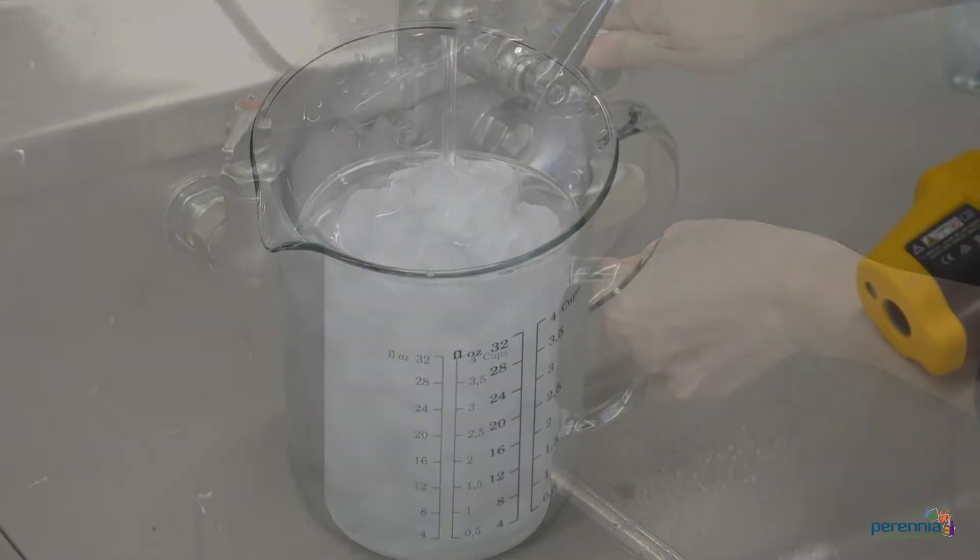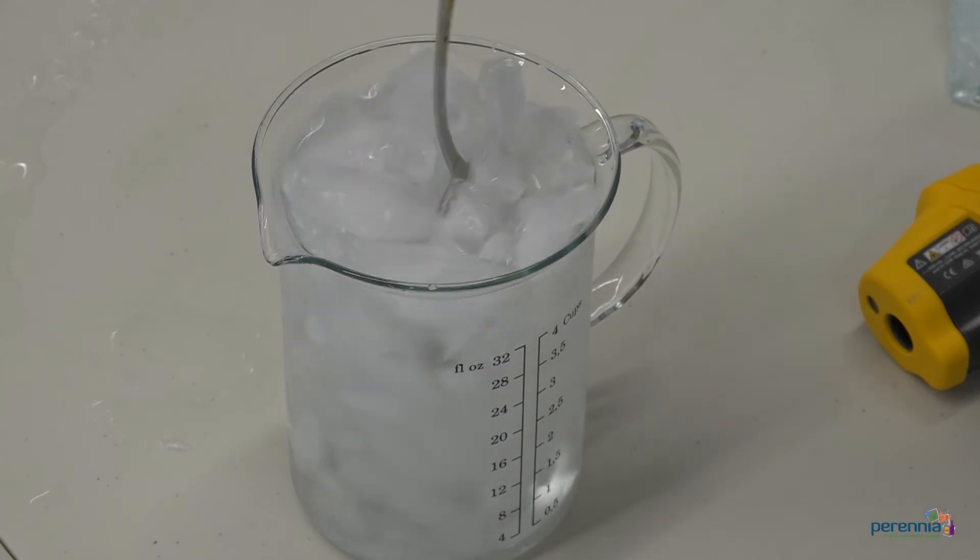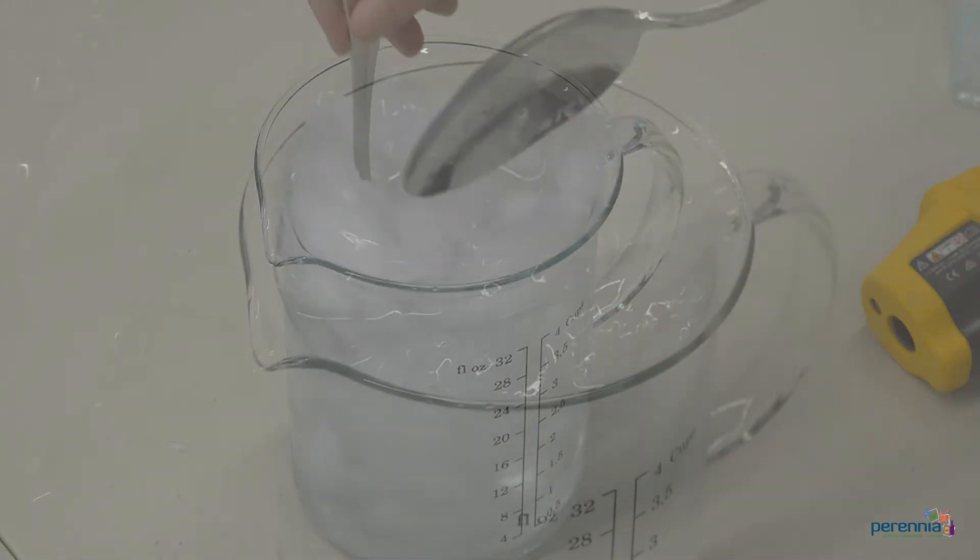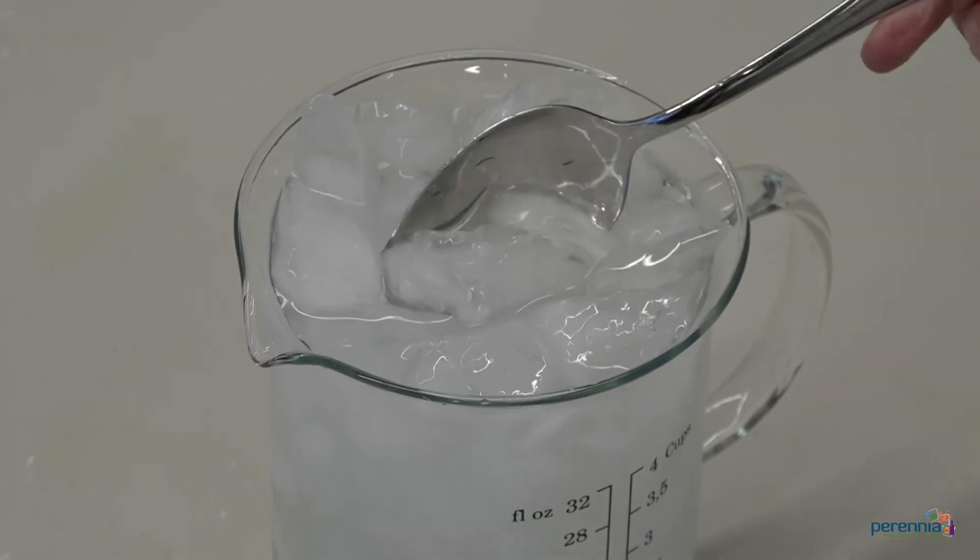Step eight, gently stir the ice mixture and let it sit for a minute or two. Step nine, create a well of open water where no ice is floating.